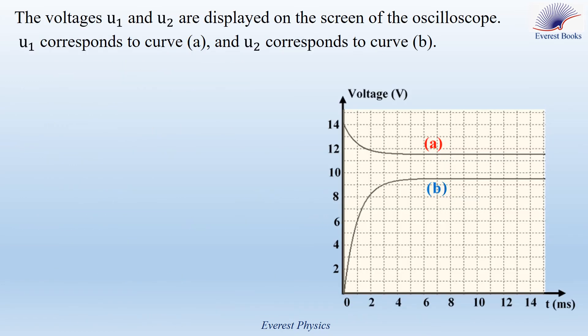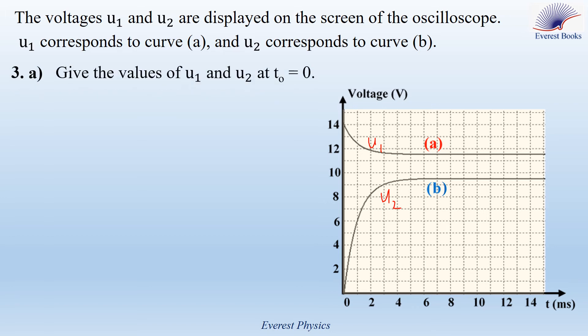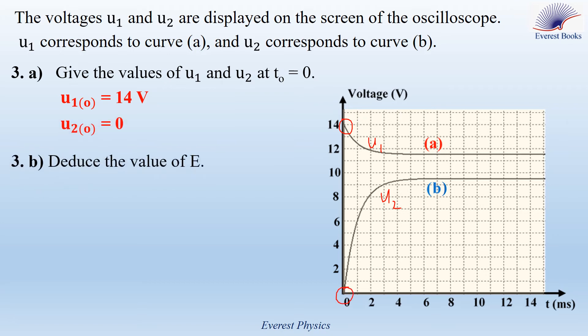The voltages U1 and U2 are displayed on the oscilloscope screen. U1 corresponds to curve A and U2 corresponds to curve B. Part 3A: give the values of U1 and U2 at time 0. Looking at the figure, at time 0, U1 equals 14 volts and U2 equals 0 volts.